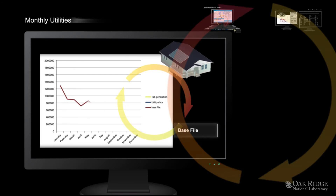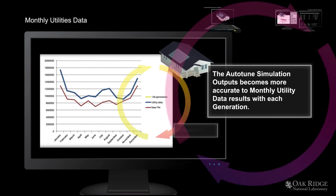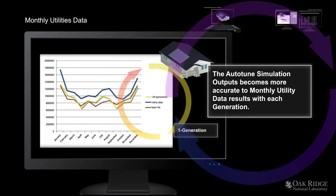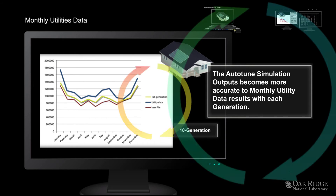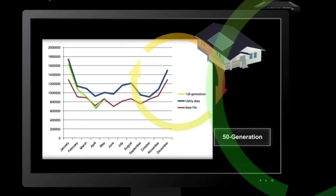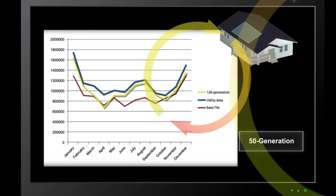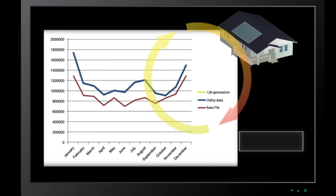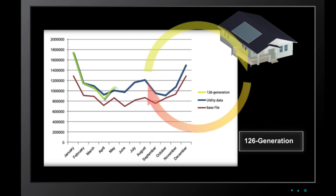One can see AutoTune in action for a real-world residential building while considering the original file, in red, and the utility data, in blue. The 50th model is much closer to monthly utility bills, but is still far off in April and May. The 100th model is closer in March, but still off in April. And the final model captures the monthly utility bills very well.